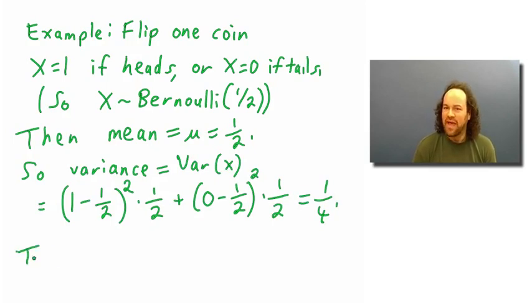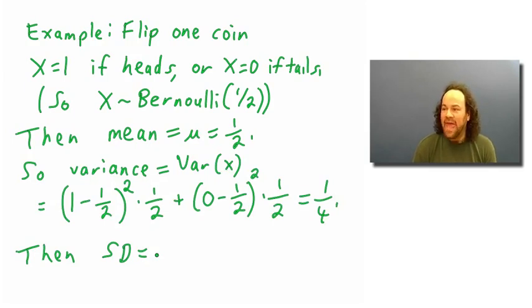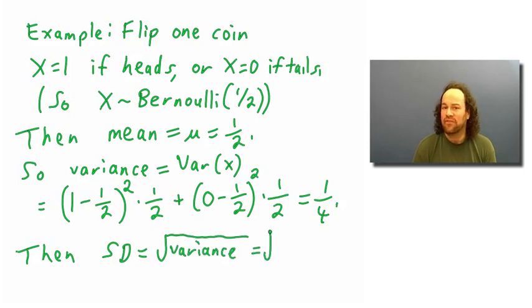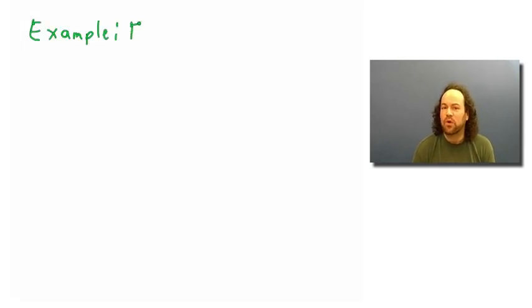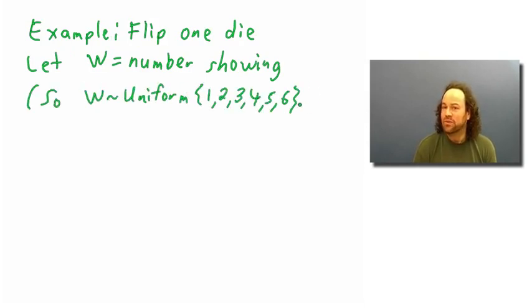We also have the standard deviation, or SD, just like in the real world. The standard deviation is the square root of the variance, so in this case the standard deviation is 1/2. For the six-sided die, we know the mean was 3.5, and we can compute the variance as (1-3.5)²×(1/6) + (2-3.5)²×(1/6) and so on up to (6-3.5)²×(1/6), which works out to about 2.92. The standard deviation is the square root of that.